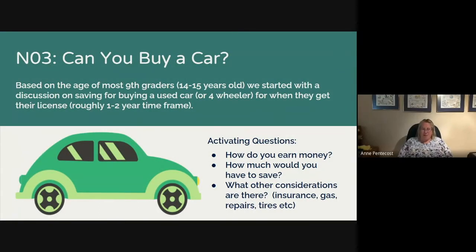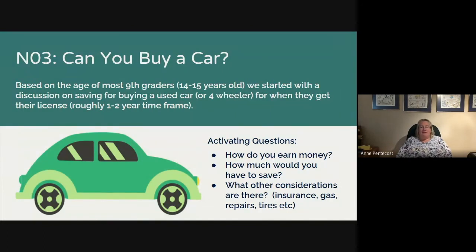Starting with activity NO3, Can You Buy a Car: a lot of grade nines are 14 and 15 year olds who are very anxious to drive and want a Lamborghini or some cool car. So we thought it would be a good way for them to learn some financial literacy by being realistic about what they could and couldn't afford and all the costs associated with that. We started with a discussion on saving for buying a used car or a four-wheeler, and looking at what they would need to have saved in order to buy what they want once they get their license.